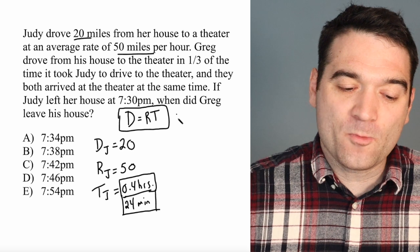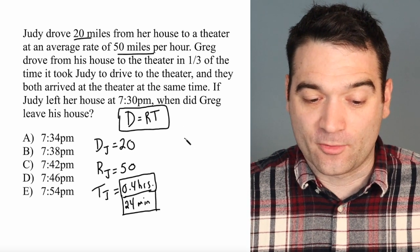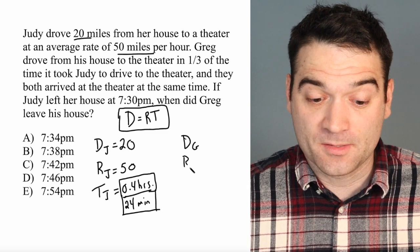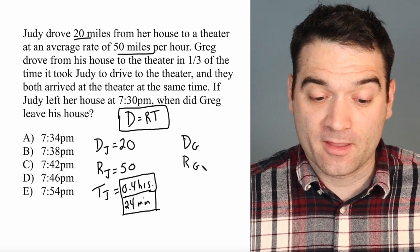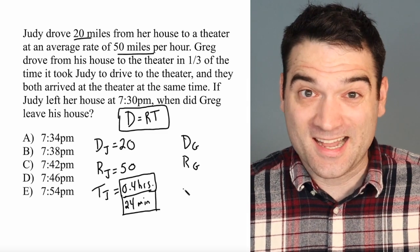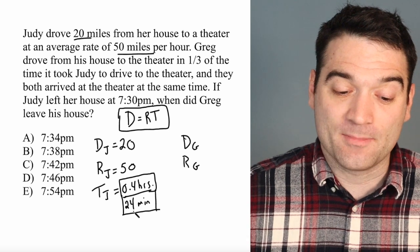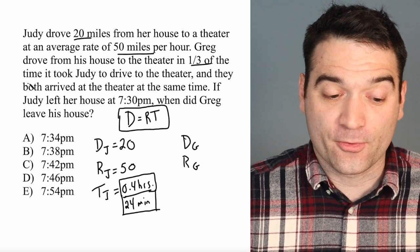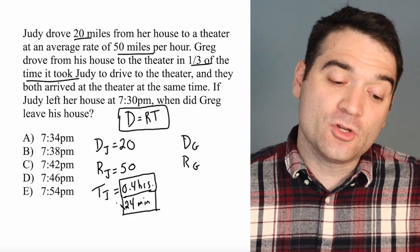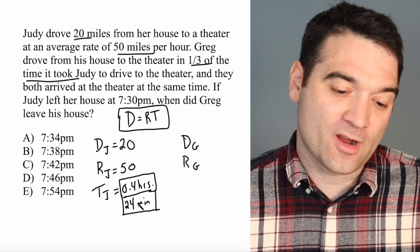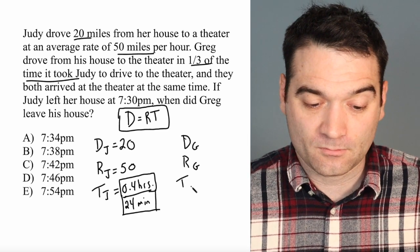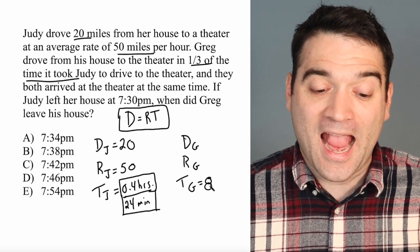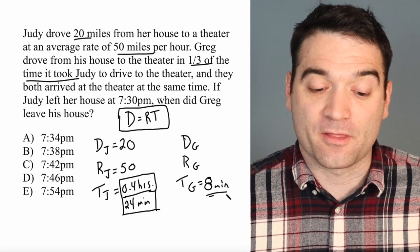What do we know about Greg? We don't know how far Greg traveled, and we don't know what his rate was. But we can figure out his time. Greg's time, according to this problem, is one-third of Judy's time. So if Judy took 24 minutes to travel to the theater, Greg took one-third of that — or eight minutes — to travel to the theater.